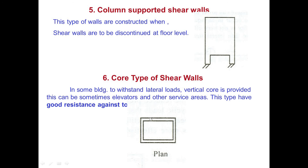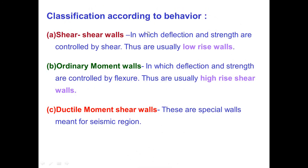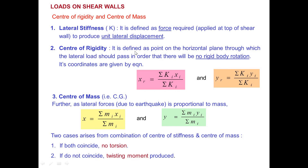Classification according to behavior: shear walls in which deflection and strength are controlled by shear are usually low-rise walls. Ordinary moment walls, where deflection and strength are controlled by flexure, are typically high-rise shear walls. Ductile moment shear walls are special walls meant for seismic regions. Walls can therefore be classified based on their behavior pattern as well.